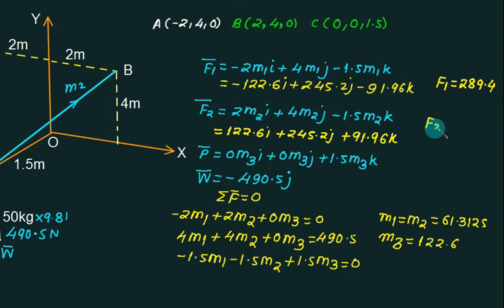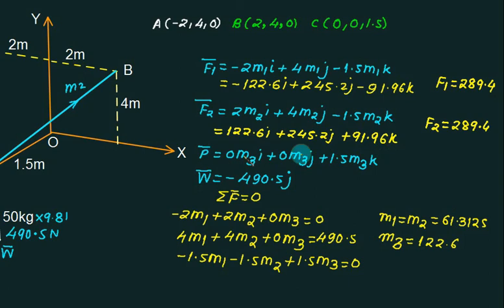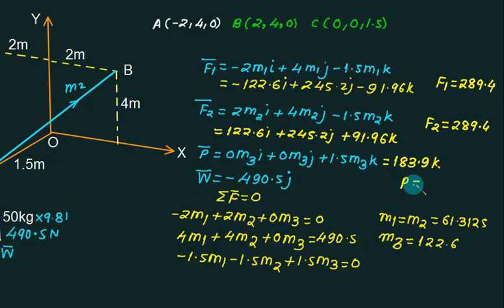Putting the values back gives a force vector of approximately minus 122.6i plus 245.2j minus a k component. Only one sign changes, so the magnitude is the same. Taking the magnitude: under root of 122 squared plus 245 squared plus 91.96 squared. The magnitude of P comes out to be 183.9 N.